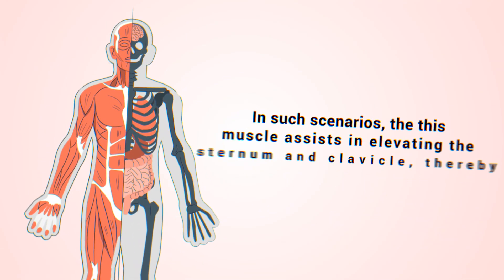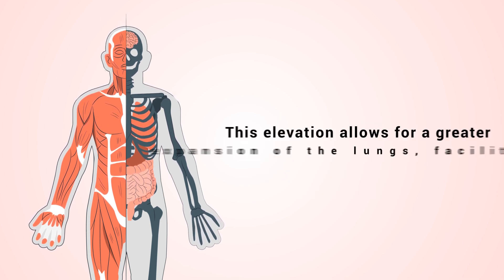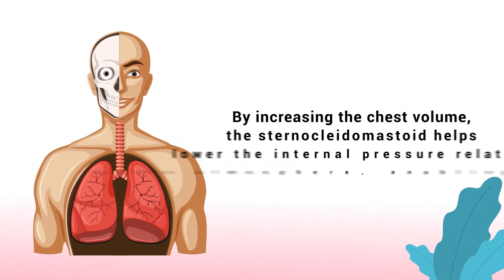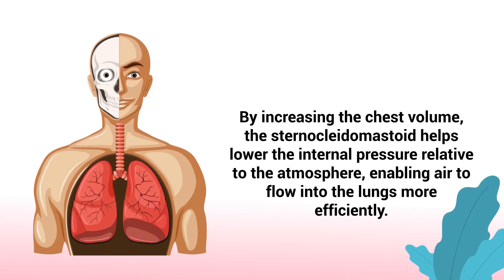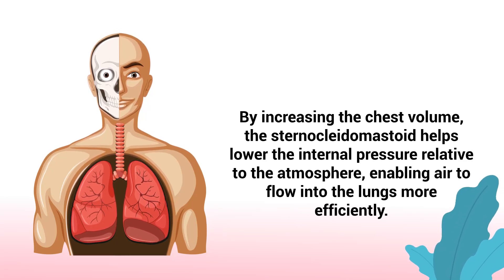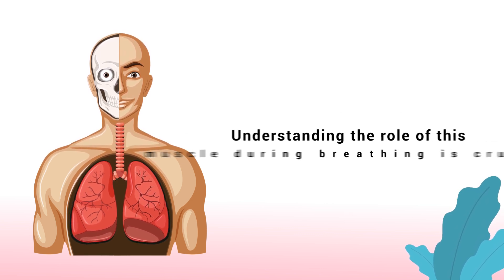In such scenarios, the muscle assists in elevating the sternum and clavicle, thereby increasing the volume of the thoracic cavity. This elevation allows for greater expansion of the lungs, facilitating deeper inhalation. By increasing the chest volume, the sternocleidomastoid helps lower the internal pressure relative to the atmosphere, enabling air to flow into the lungs more efficiently.